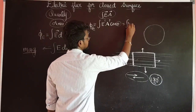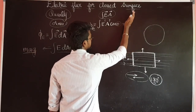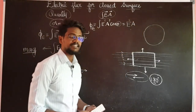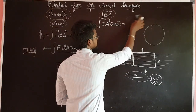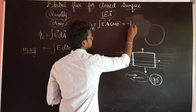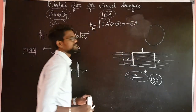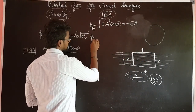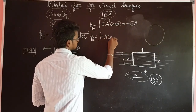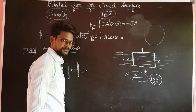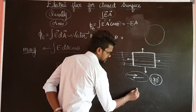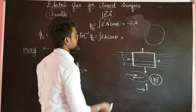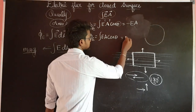The integral of E·A with cos 180° gives minus 1, so that surface contributes negative flux. For another surface, the electric field and area vector are at 90°, so cos 90° equals 0, meaning the electric flux through that surface is 0.